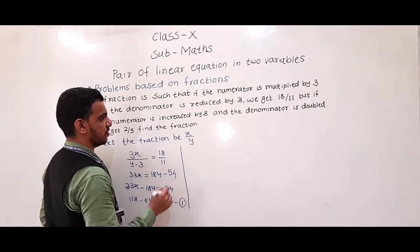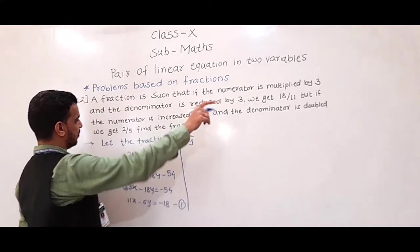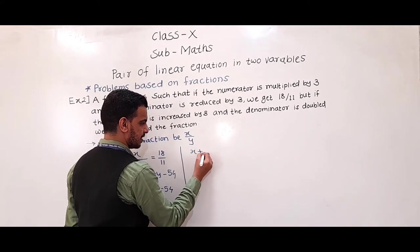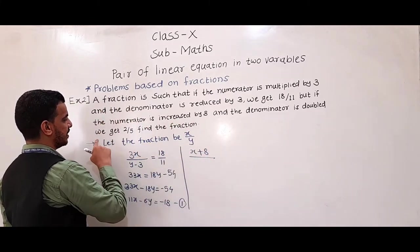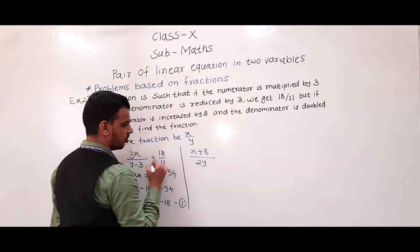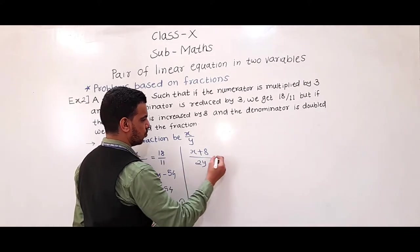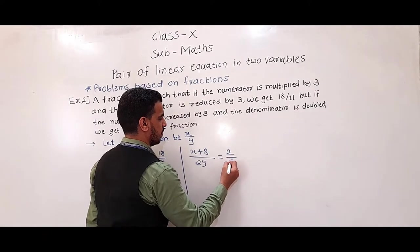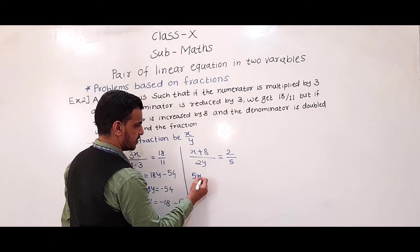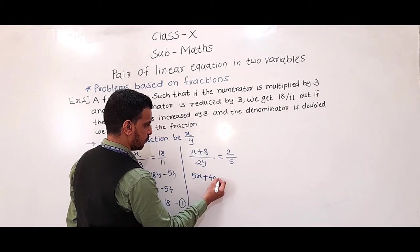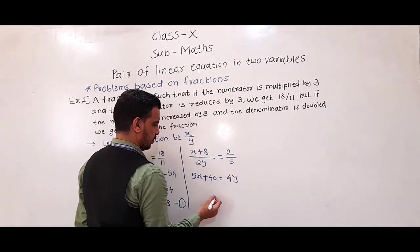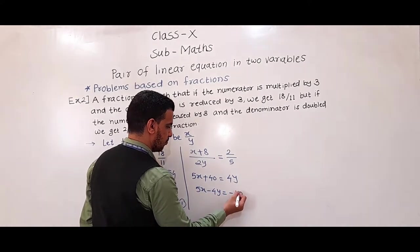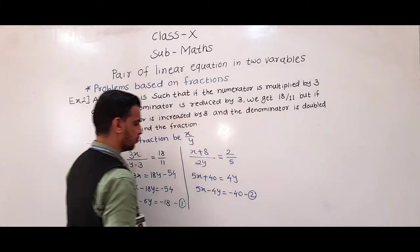The second condition is: if the numerator is increased by 8 and the denominator is doubled, so (x + 8) / 2y = 2/5. If we simplify by cross-multiplying: 5x + 40 = 4y, so 5x − 4y = −40. This is equation 2.